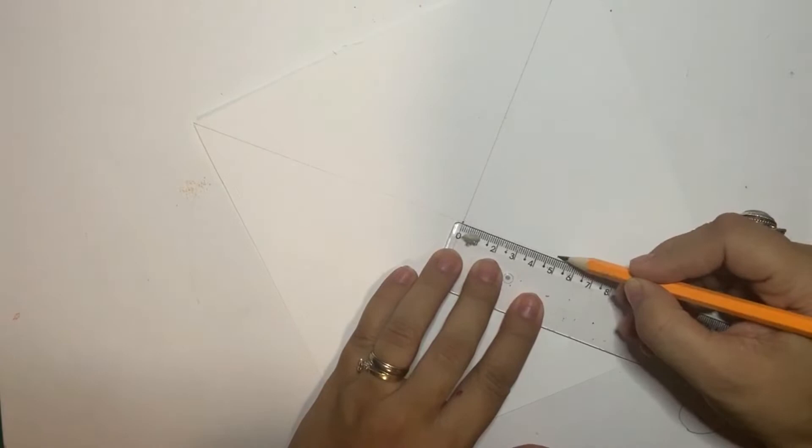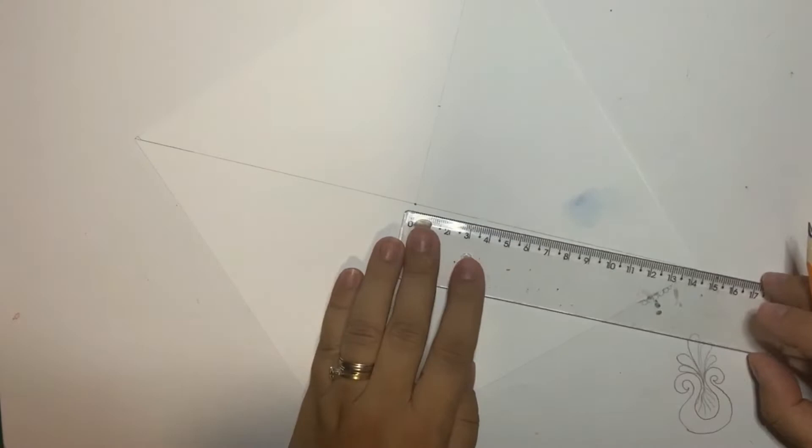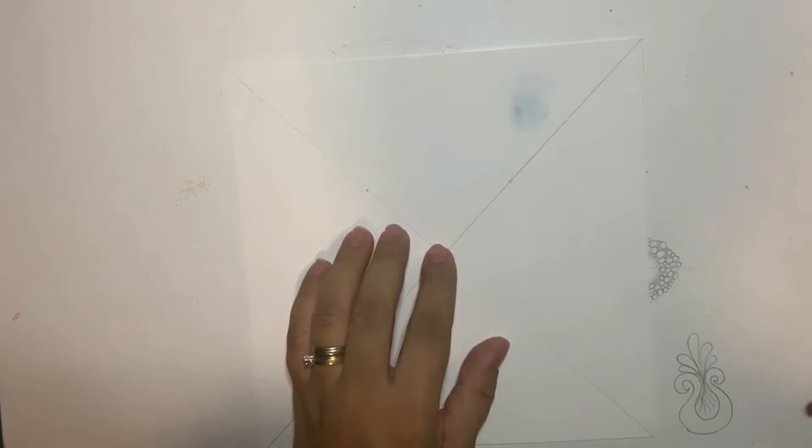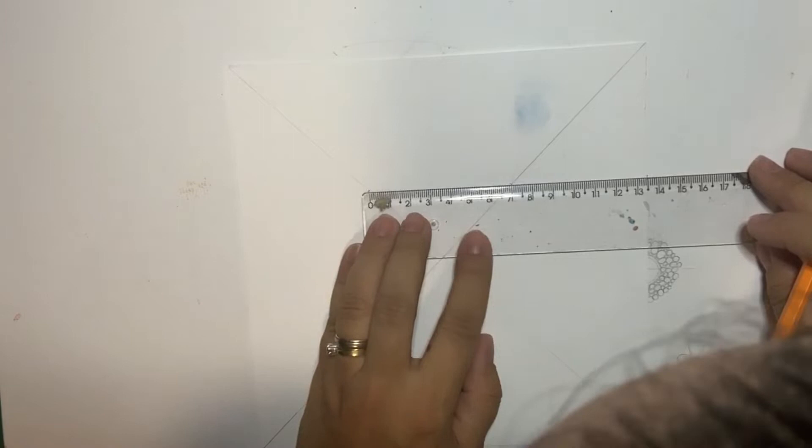I'm gonna, from the center to one of the diagonal lines, mark five centimeters, and to the one beside also on the fifth centimeter. Then I'm gonna find the distance between these two marks that I've made and it turns out to be seven.